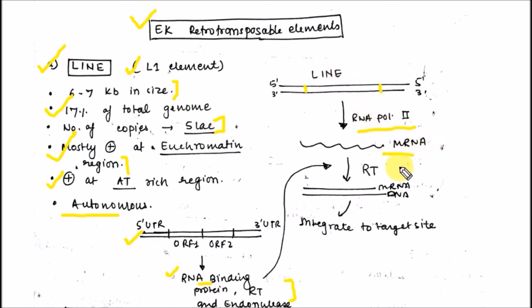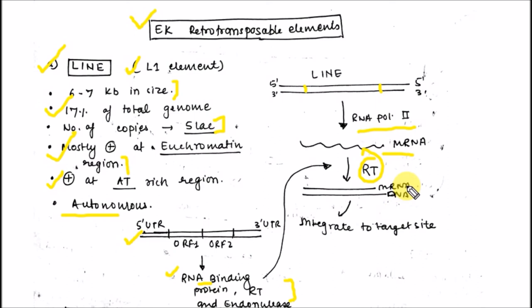RNA polymerase 2 transcribes these transposable elements into RNA, and this RNA is converted into DNA with the help of reverse transcriptase. This mRNA-DNA hybrid or single-stranded DNA is then integrated into the target site.